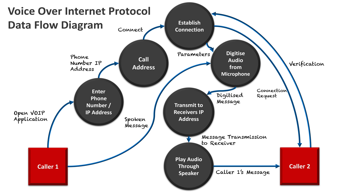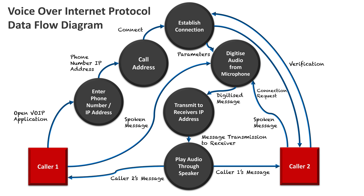Once Caller 2 hears Caller 1's message, they do the same thing back: Caller 2 speaks into their microphone, the audio gets digitized, transmitted to Caller 1's IP address, and played through Caller 1's speaker. That cycle continues for both users — Caller 1 and Caller 2 continually speak to each other, their microphones digitize their audio, it gets transmitted to each other's IP address, and their speakers play the messages.